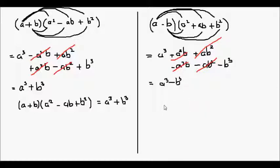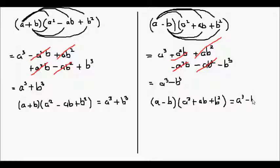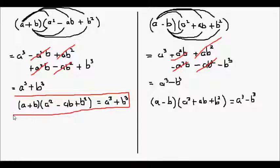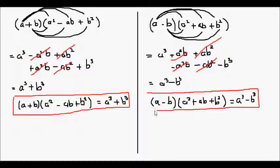So we have another important algebraic identity: a minus b multiplied by a squared plus ab plus b squared is equal to a cubed minus b cubed. This is known as the difference of two cubes. So we have the sum of two cubes and the difference of two cubes as two important algebraic identities.